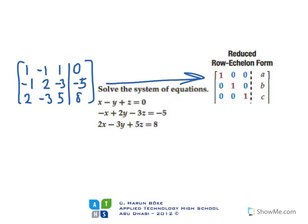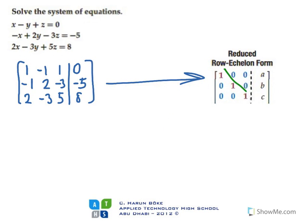The difference between reduced row echelon form and row echelon form is the entries above the diagonal. In reduced row echelon form, they are all zero, whereas in row echelon form they are numbers different from zero. So in reduced row echelon form, the diagonal entries are all ones and all other entries are zero — this part is called the identity matrix.